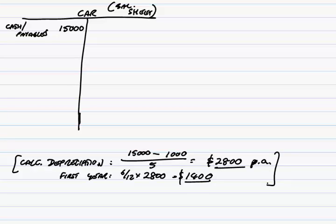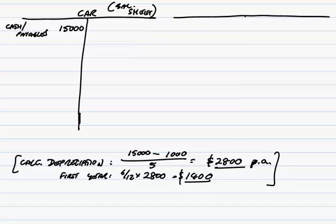The first year is going to be 1,400, and we need two things: an expense for the income statement, and to reduce the value. To reduce the value, we could credit the car with 1,400 — that would reduce the debit balance — but we don't do that. We need to show a breakdown of original cost less the amount we're deducting. So instead of crediting the car account, we open up a new account called Accumulated Depreciation.